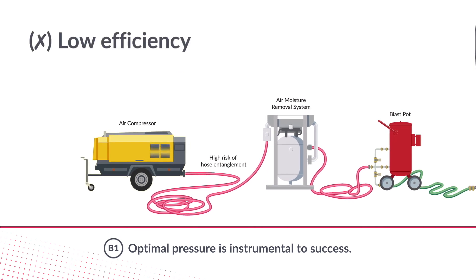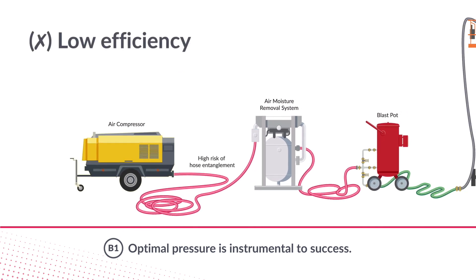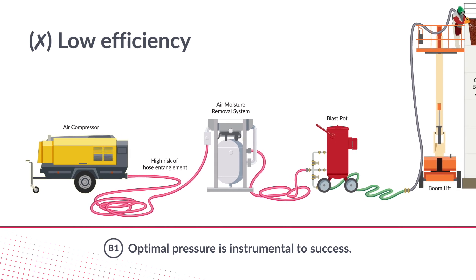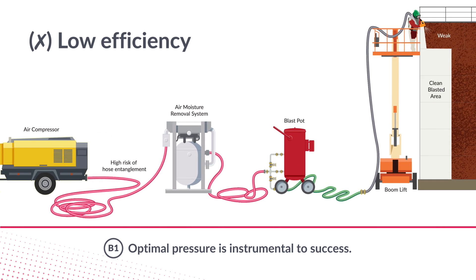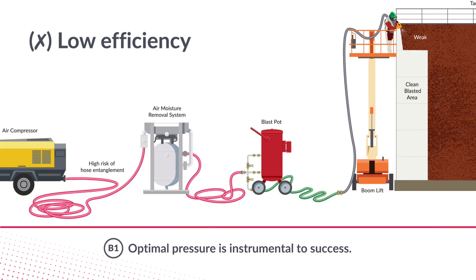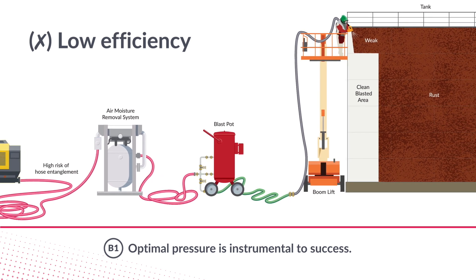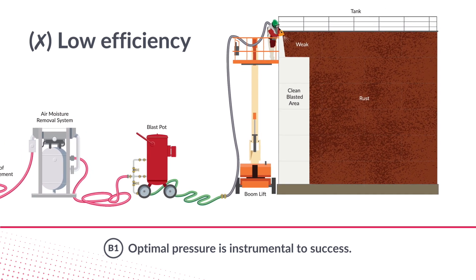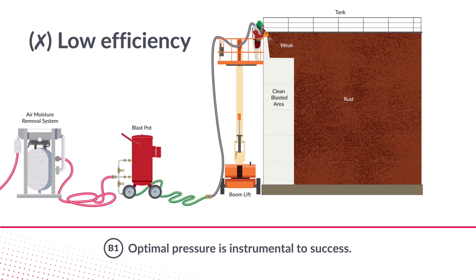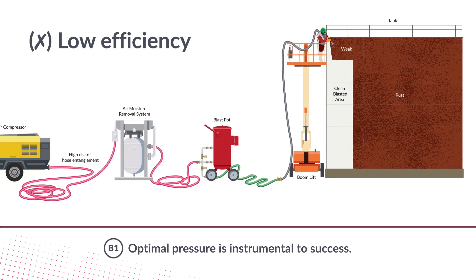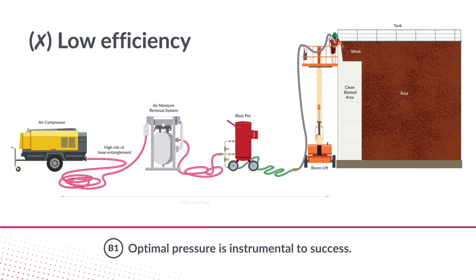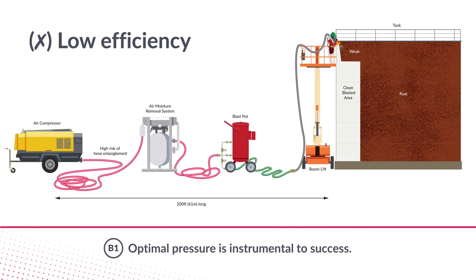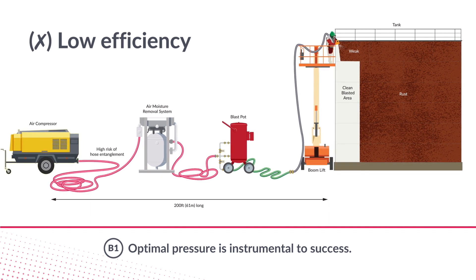Pressure loss occurs for a variety of reasons: from an undersized compressor, having an unnecessarily lengthy hose, improper sized hoses, and worn nozzles. Pressure loss can also be caused by hoses rising vertically when blasting at heights, hose entanglement, leaks, poor hose condition, and connections.